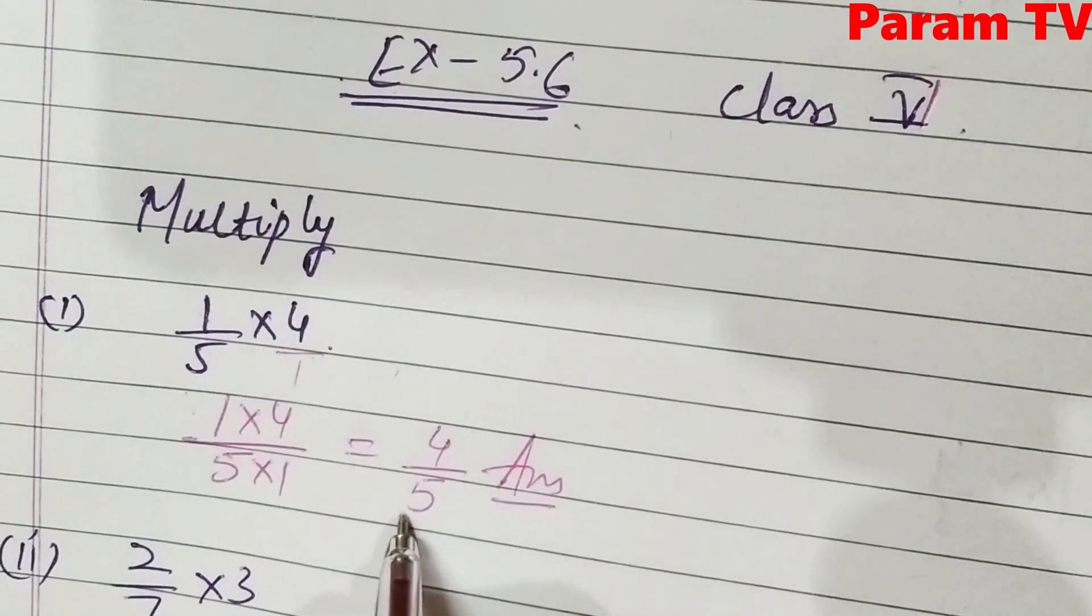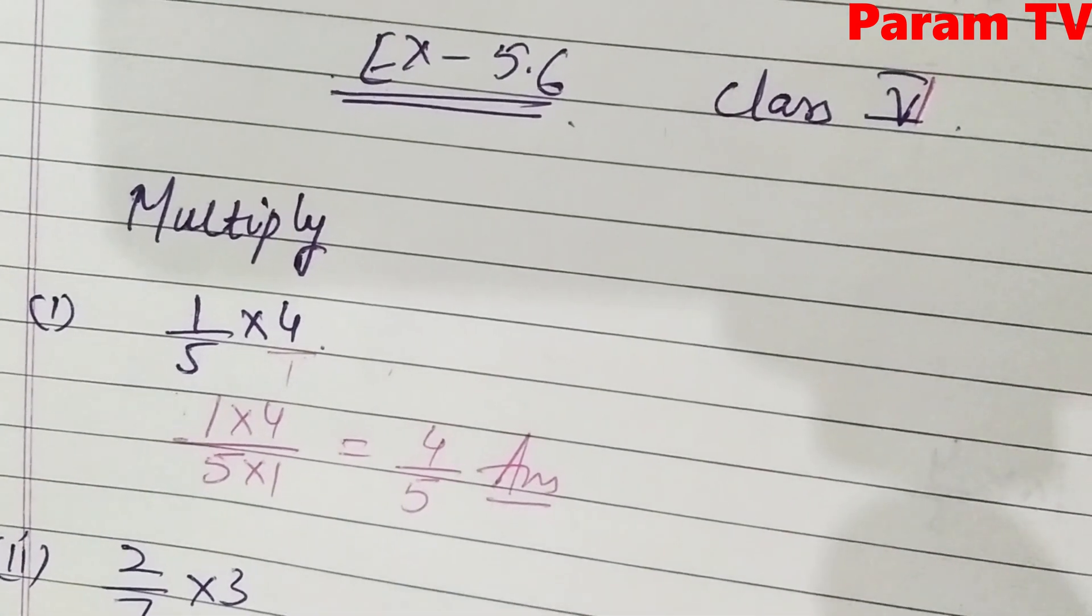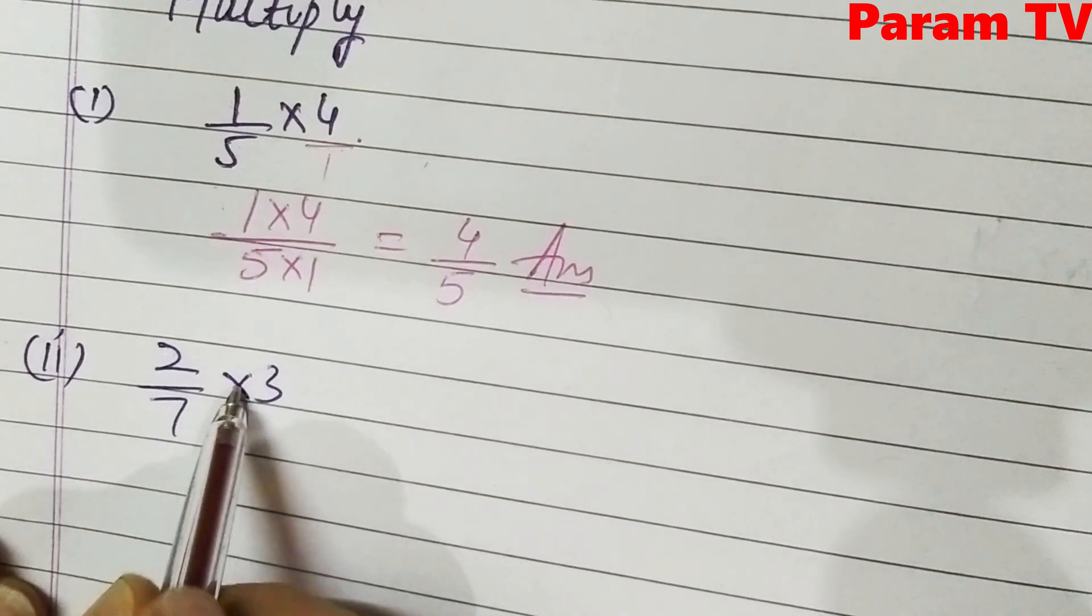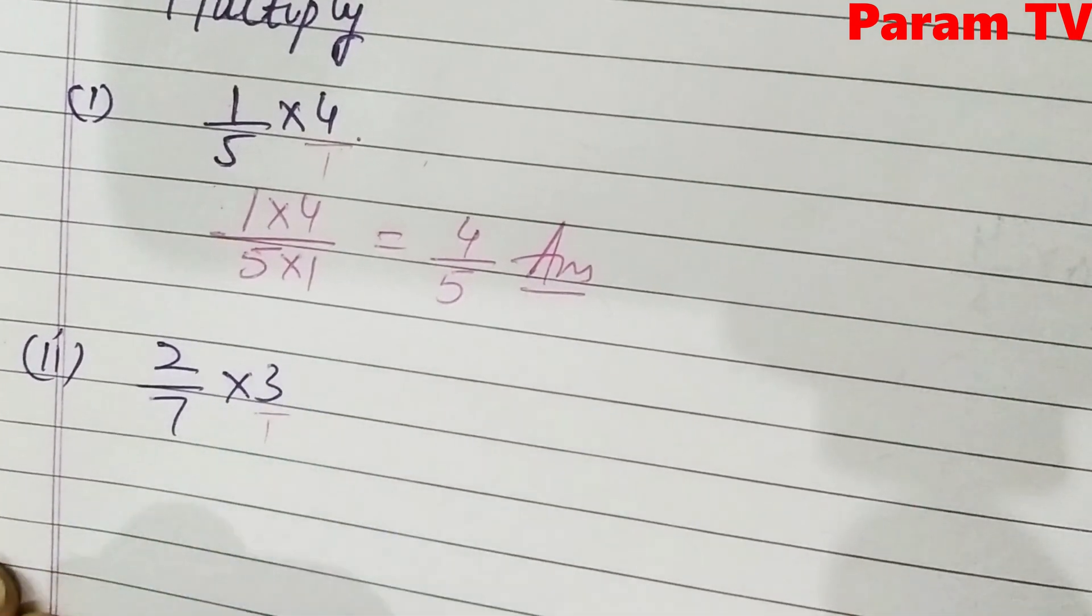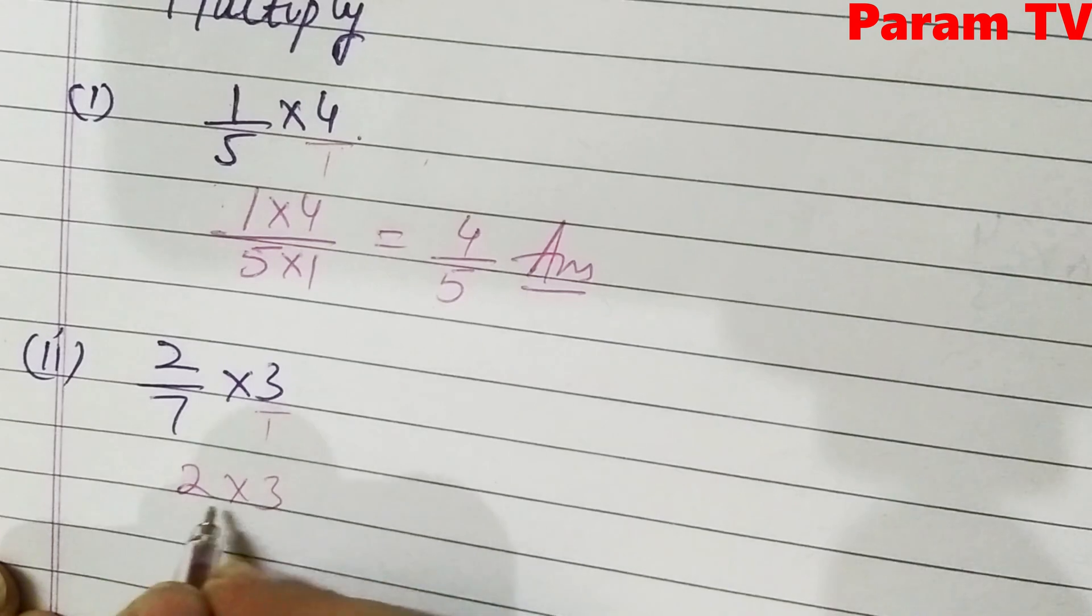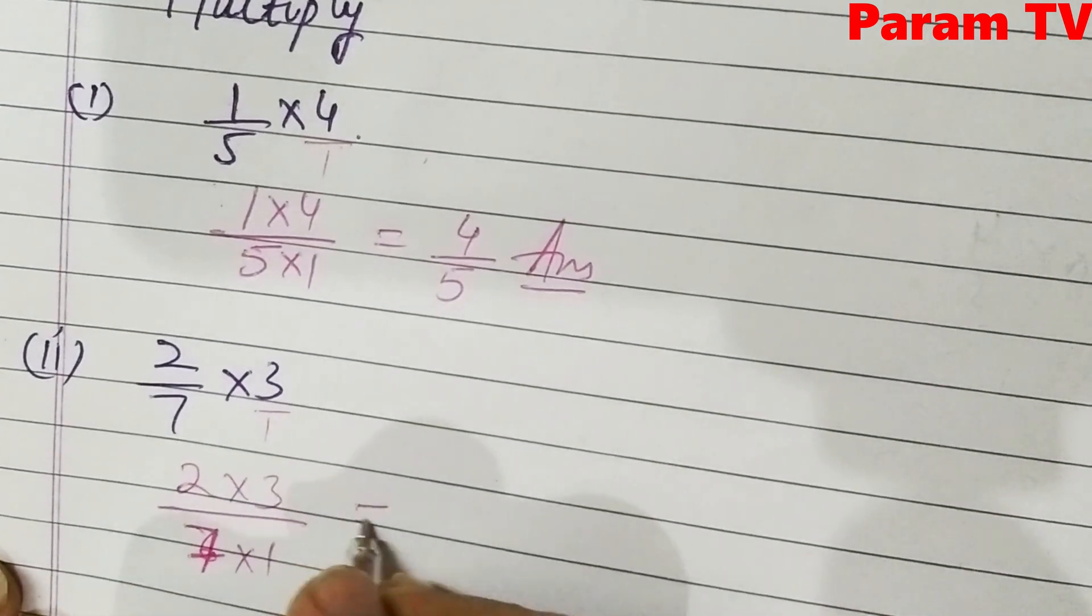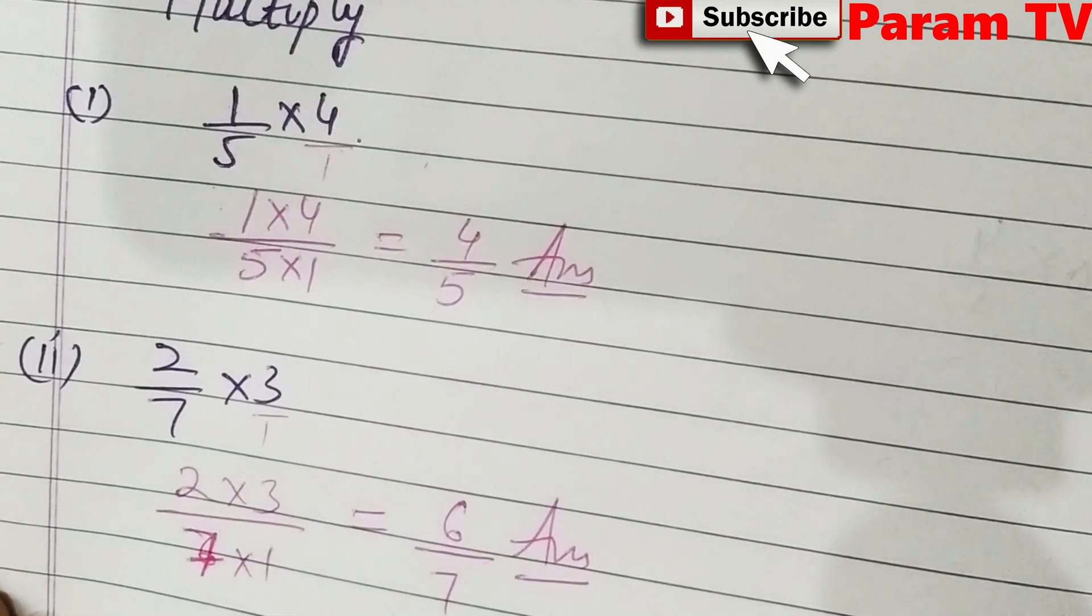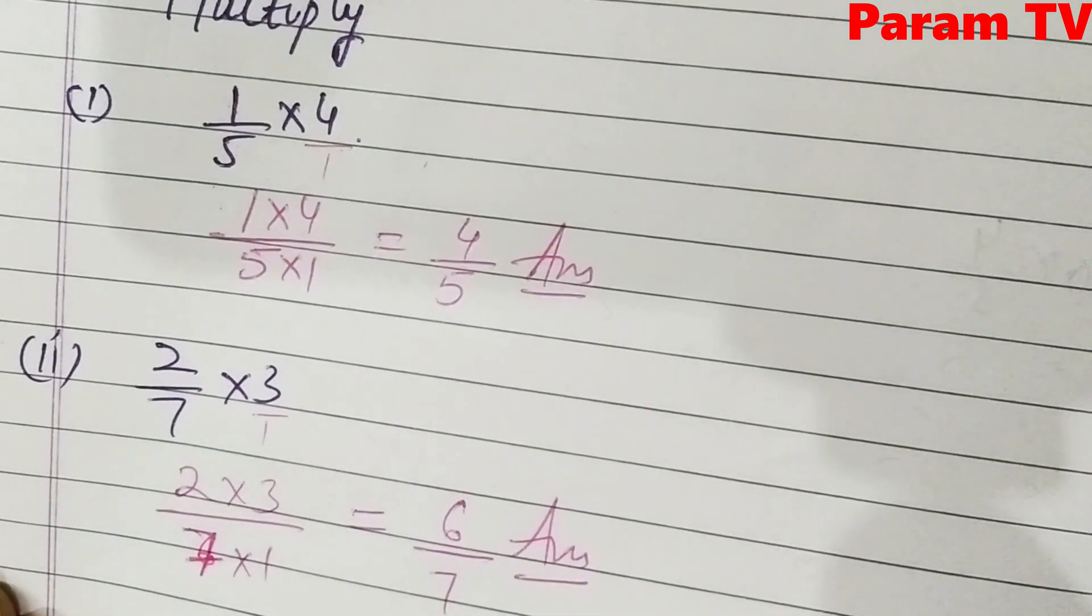This is not in mixed fraction because it's a proper fraction. Look at second part. This is 2 by 7 into 3. So 3 means 3 by 1. 2 into 3 over 7 into 1. This is 3 2s, 6 by 7. This is the answer. It's a proper fraction, so it's done here. And it doesn't cancel.